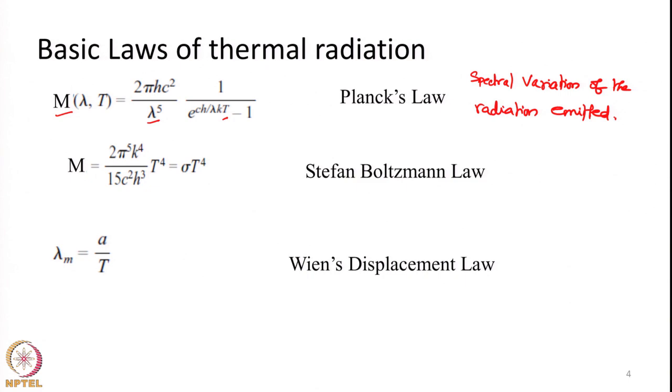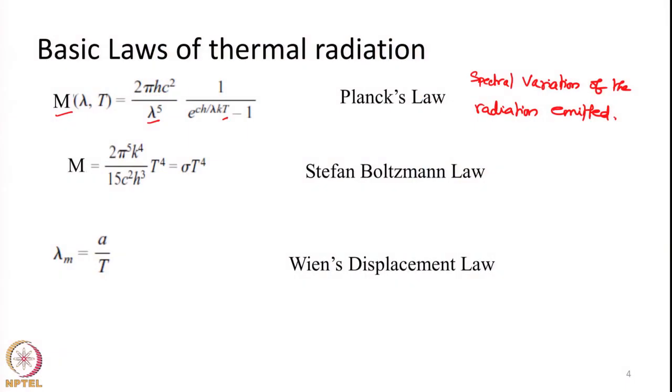Most natural objects, when they emit electromagnetic radiation, do not emit at a single particular wavelength — they emit energy as a mix of wavelengths. The amount of energy emitted by an object varies with respect to wavelength, and Planck's law helps us estimate what amount of energy is emitted at a given wavelength. If we want the total amount of radiation emitted, Stefan-Boltzmann law helps us.